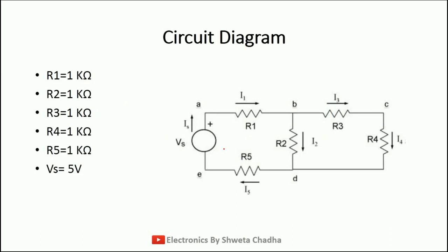This is the circuit diagram which I have considered. It consists of a total of 5 resistances named R1, R2, R3, R4, and R5. This is the arrangement we are supposed to draw on the grid board, and Vs is the input voltage — the power supply we will be providing. The value of all 5 resistances R1 through R5 are equal to 1 kilo ohm, whereas the power supply Vs is equal to 5 volts.